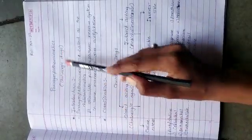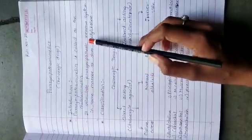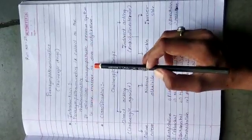Good morning everyone, my name is Kali Pallavi and my topic name is Parasympathomimetic, that is cholinergic drugs. Introduction: Parasympathomimetic is also called as cholinomimetics. It stimulates parasympathetic nervous system in the same manner as does acetylcholine.